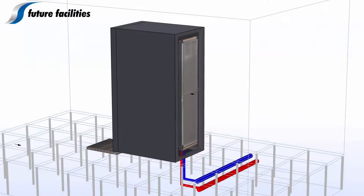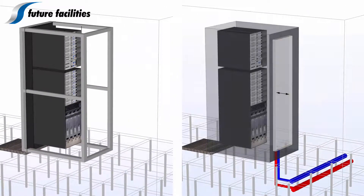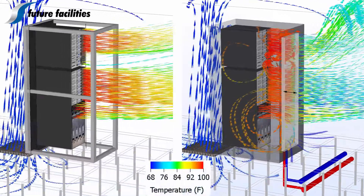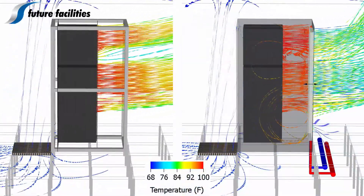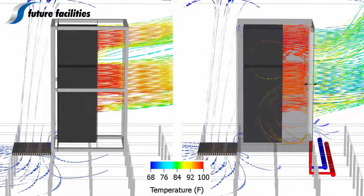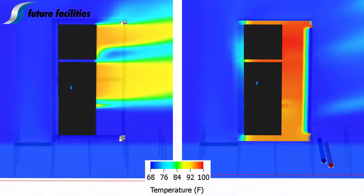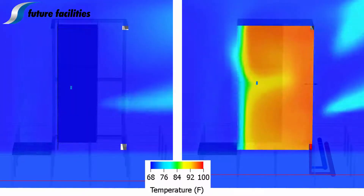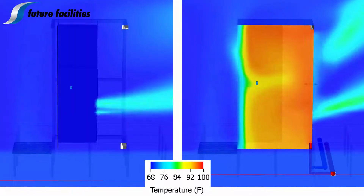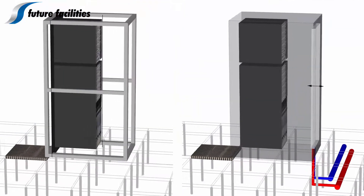Now with the same cabinet setup we can add a rear door heat exchanger and demonstrate the impact of adding it to your solution. On the design side you can quickly model and test different configurations faster than traditional physical prototyping. This allows you to quantify the thermal performance giving you practical feedback to further optimize the hardware. In this case we can see a significant drop in temperature across the heat exchanger.